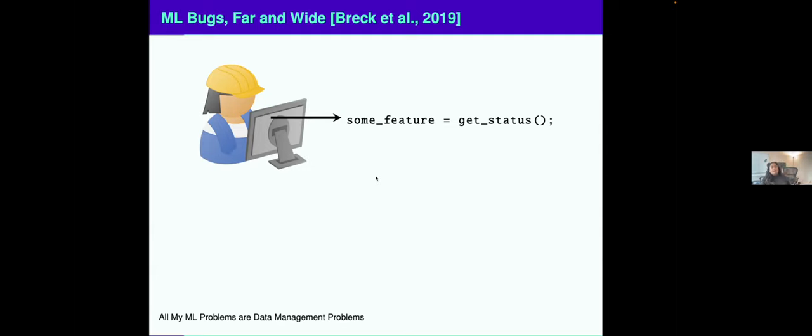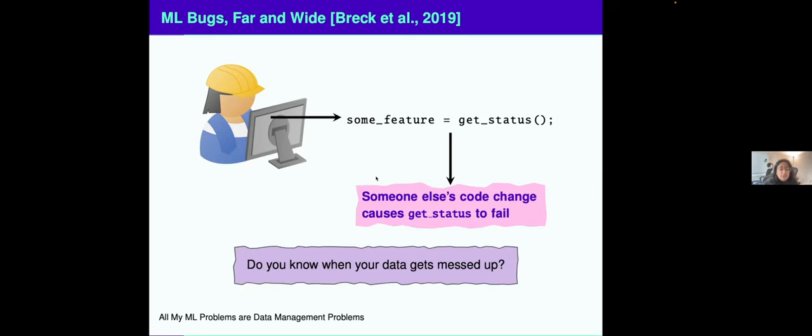One is you have this ML model that takes in a feature that relies on a different part of the code base. And if an engineer makes a change to that code base that causes this get_status to fail, how would you know? Maybe it's failing quietly, returning a negative value, something that doesn't put an error out there. And it really begs the question: do you know when your data gets messed up?